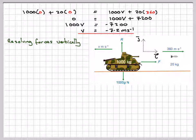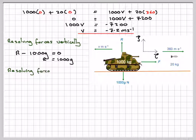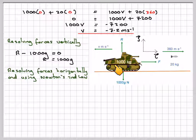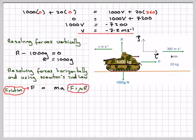Now resolving the forces vertically, R minus 1,000G equals 0 because there's no movement in this direction, so that gives R is 1,000G. The only force acting horizontally will be the frictional force as the tank moves backwards once the shell has been fired. Resolving forces horizontally and using Newton's second law, F equals MA, where this is the friction, and F is also equal to μR.